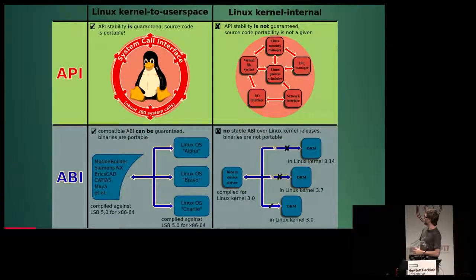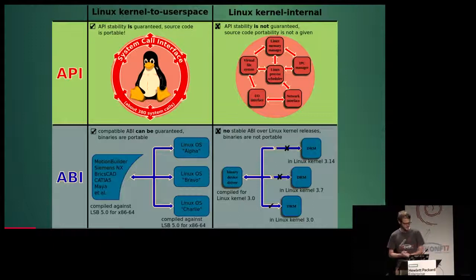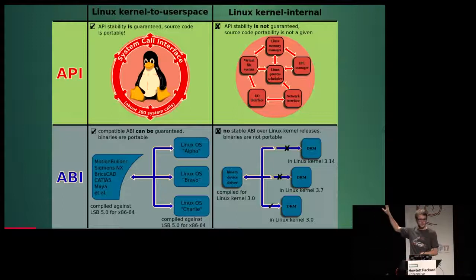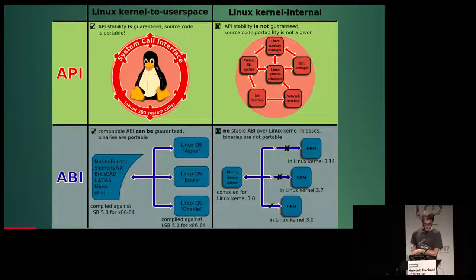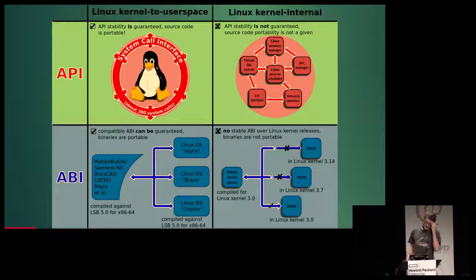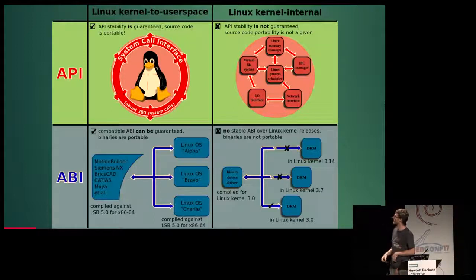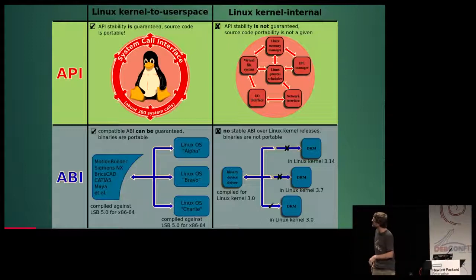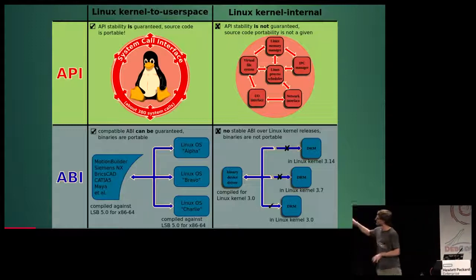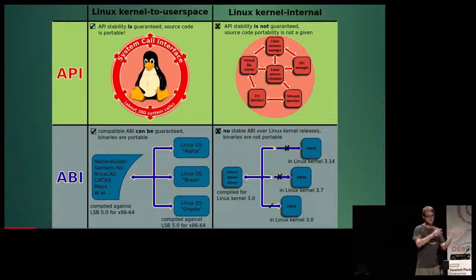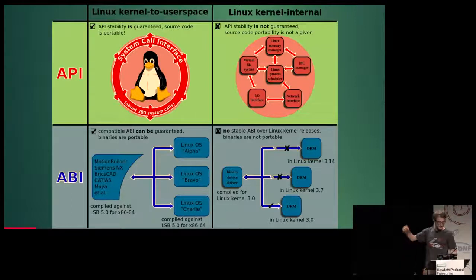This is just a graph from the LSB documentation or the LSB Wikipedia page that explains we have everything on the Linux kernel side. They can break things internally, but they guarantee stability on the API side. We kind of have the same for the software. And then you could have Oracle Builder, Siemens, Annex, Maya, etc., compiled against LSB and run on any Linux OS Alpha, Bravo, or Charlie.